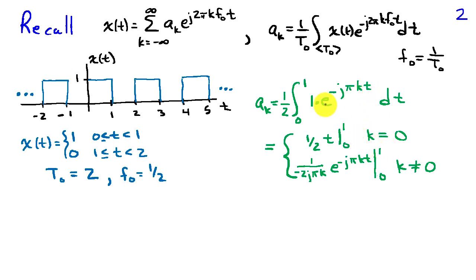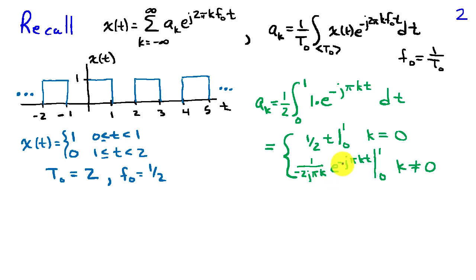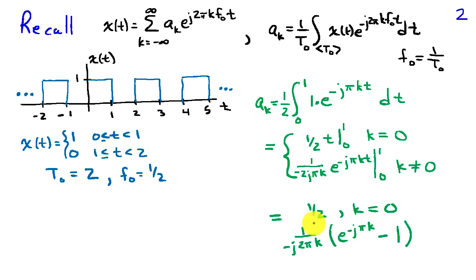When k is equal to 0, the exponent goes away and we're just integrating 1 from 0 to 1, so that becomes one half times t evaluated at 1 and 0. When k is not equal to 0, the integrand is of the form e to the at, so the integral is 1 over a times e to the at. We get one half over negative j pi k times e to the negative j pi kt, evaluated from 0 to 1, giving 1 over negative j 2 pi k times e to the minus j pi k minus 1.